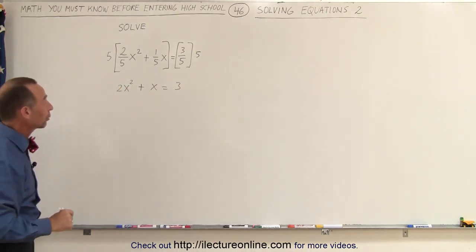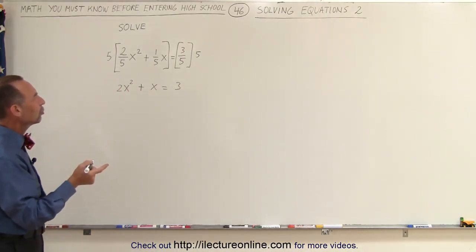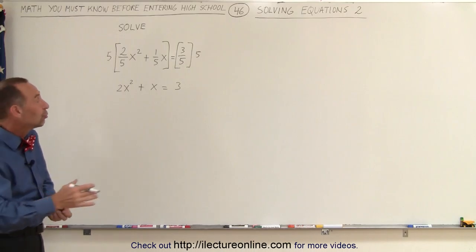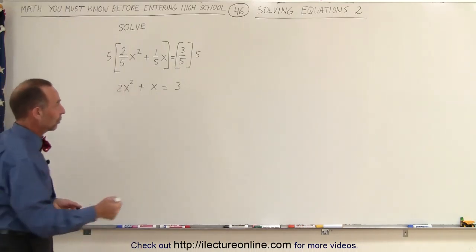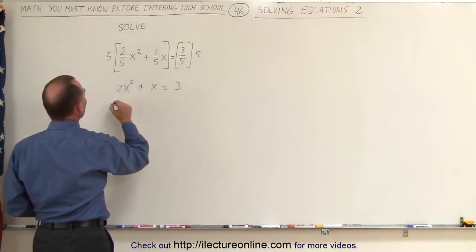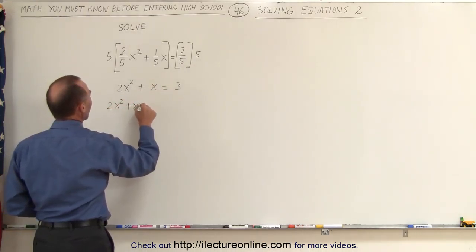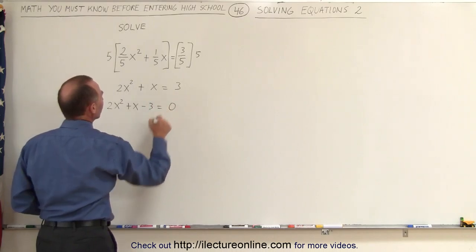The 5 cancels out. We have 2x² + x = 3. Now that looks a little bit more like a quadratic equation. The next thing we should do, since it's a quadratic equation, is move everything to one side and set it equal to 0 on the other side. So we move the 3 over, and we get 2x² + x - 3 = 0.